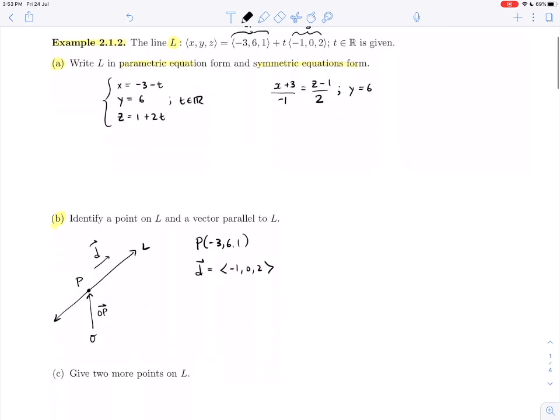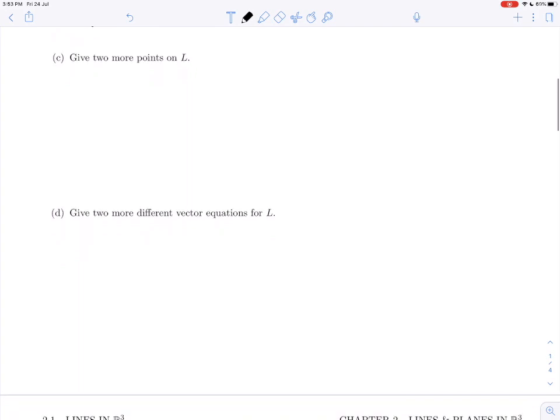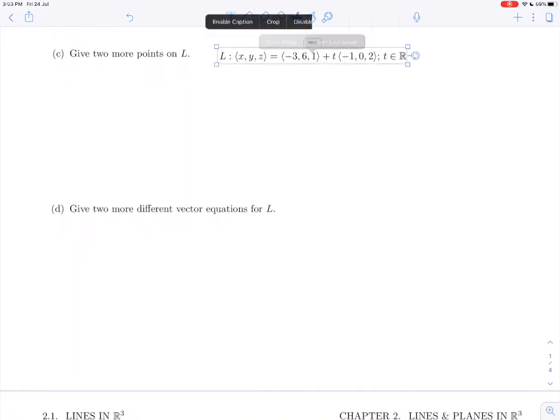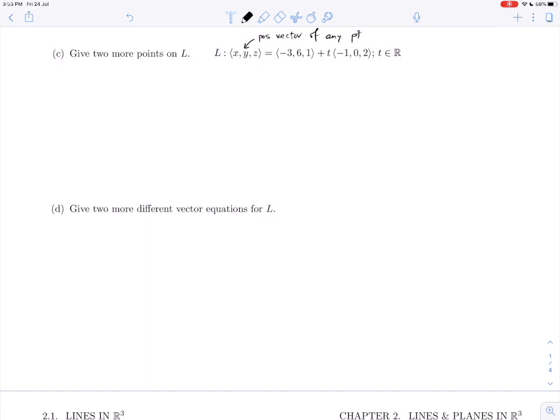The next part, C, asks us to give two more points on L. Let's remind ourselves what L is. To give two more points on L, we have to remember that this here was the position vector of any other point—this is the position vector of any point on L. What we have to do is just choose values for this parameter t to find some more points.